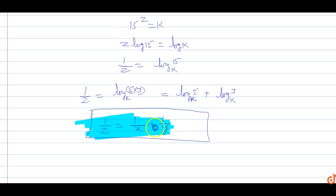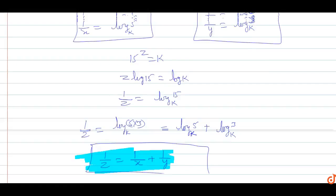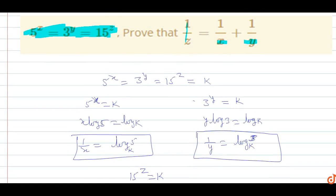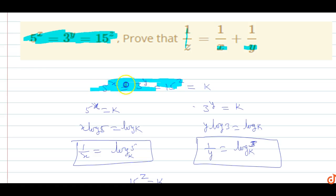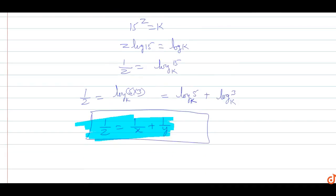So we have proved that 1 upon z equals 1 upon x plus 1 upon y when 5 power x equals 3 power y equals 15 power z. This is the answer for this question.